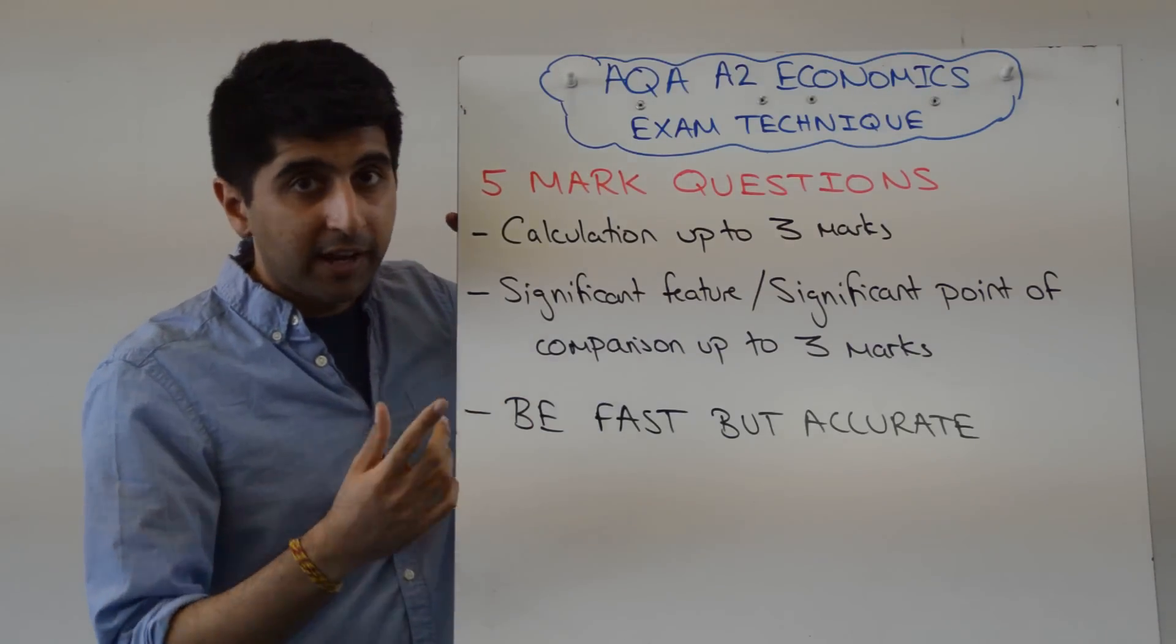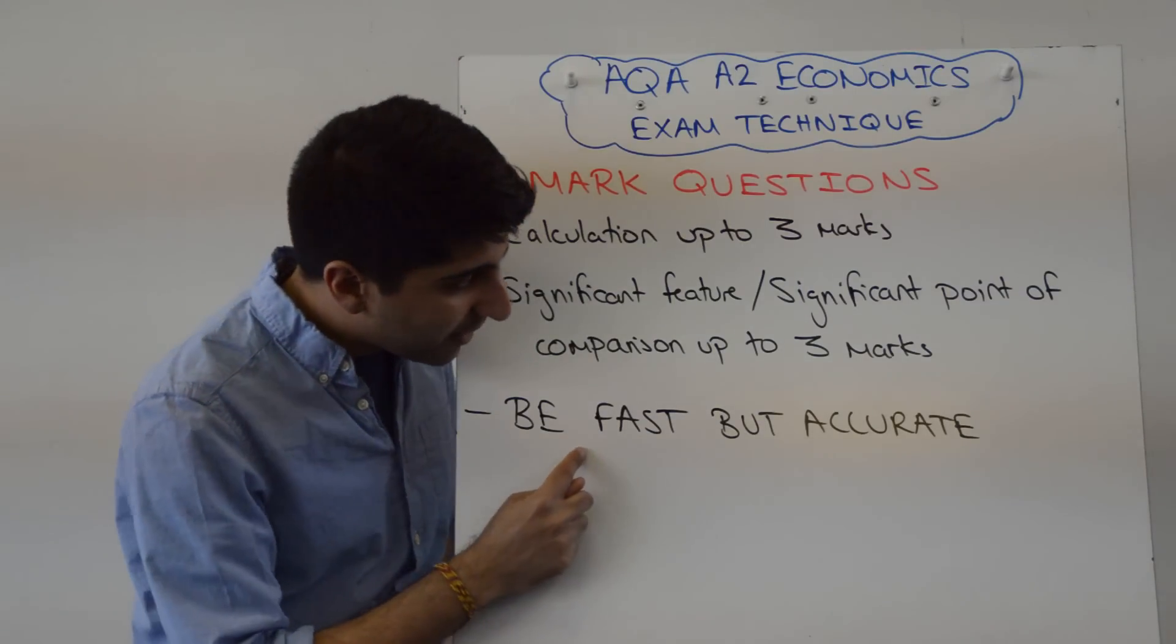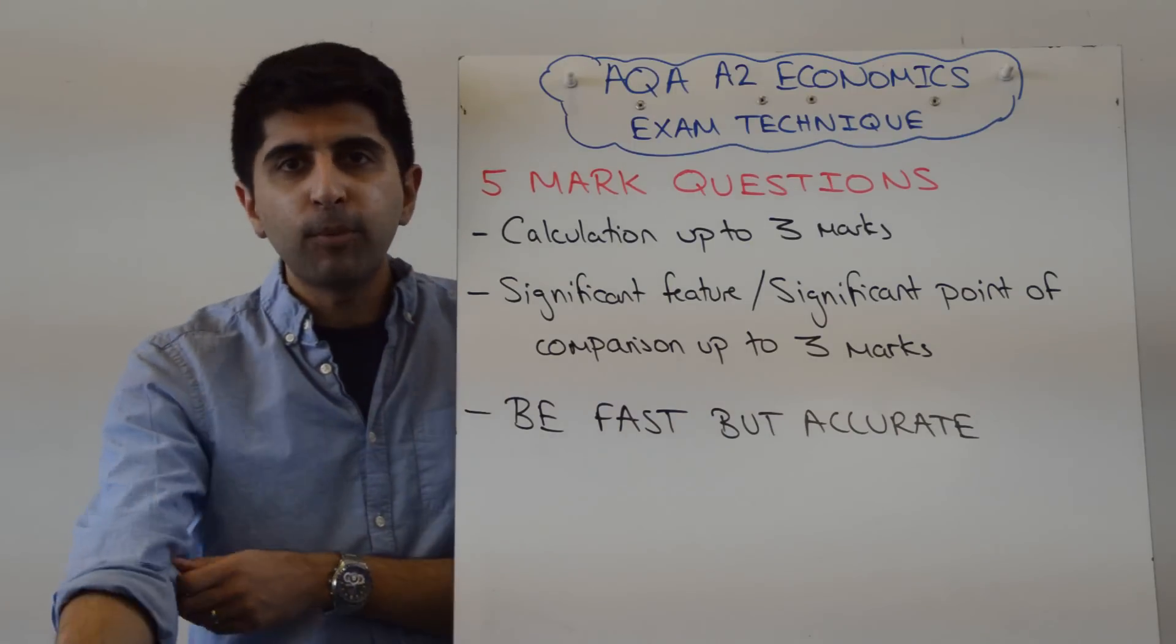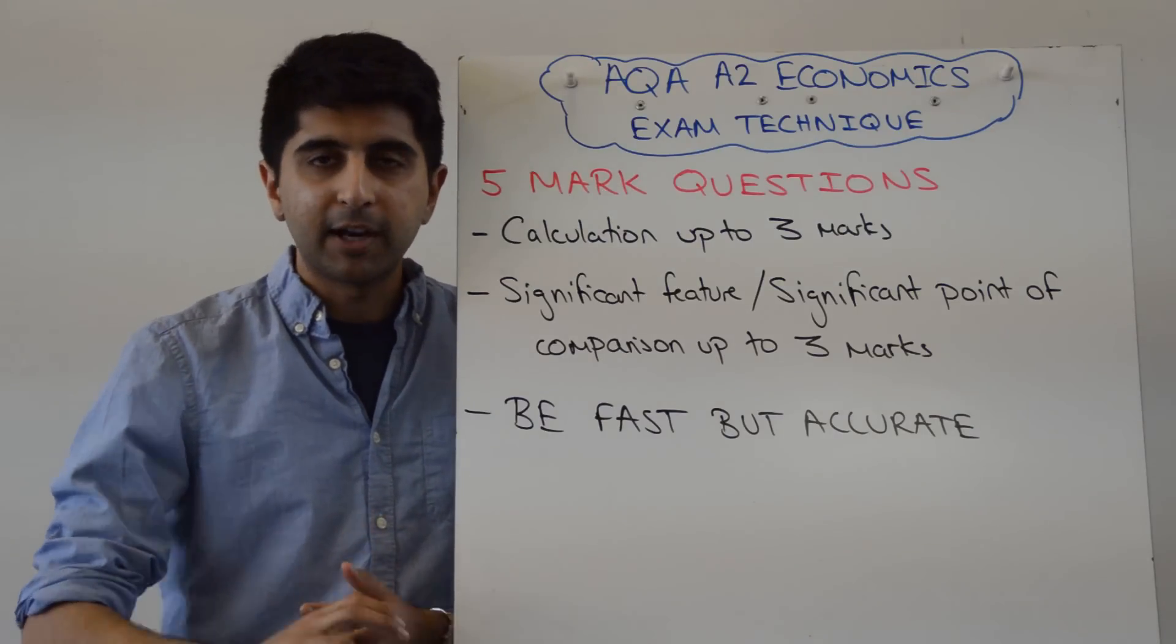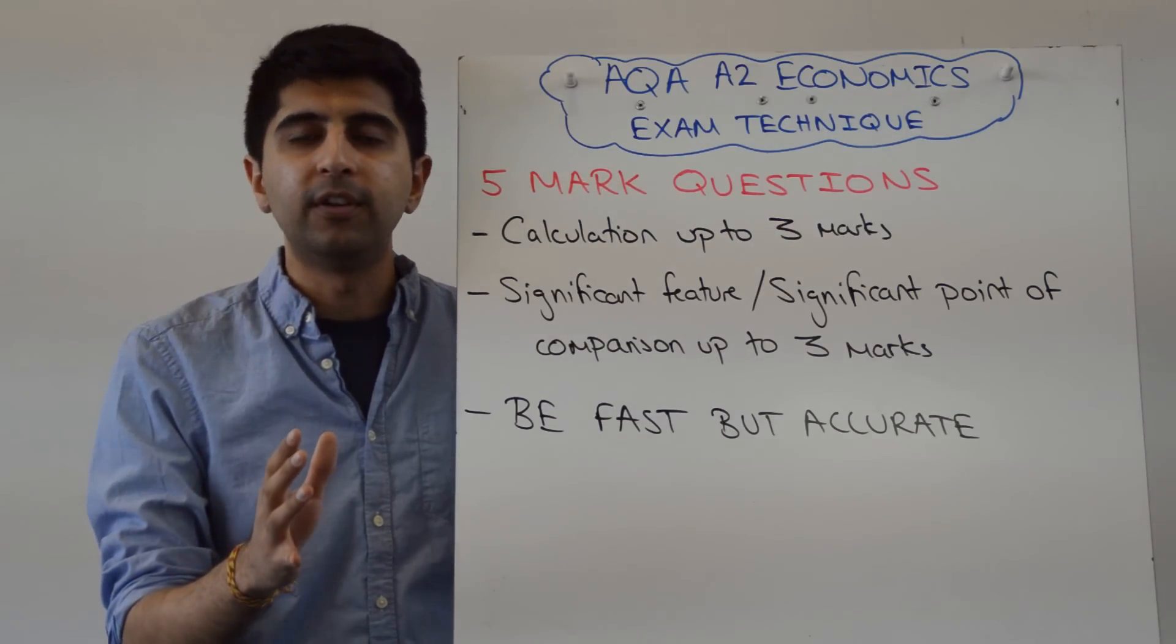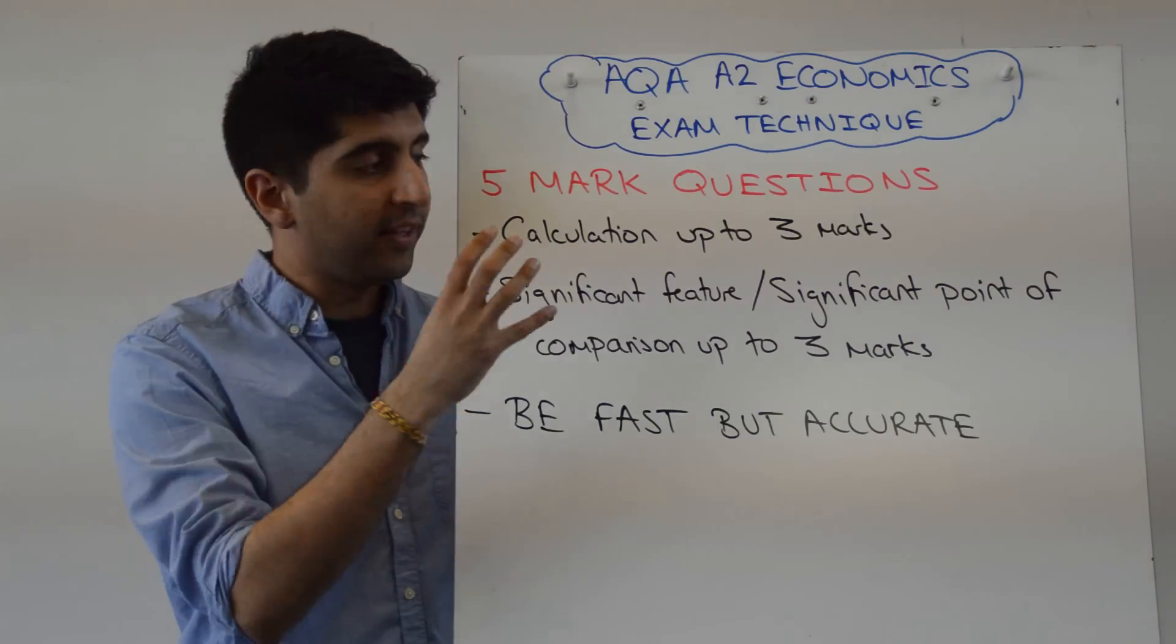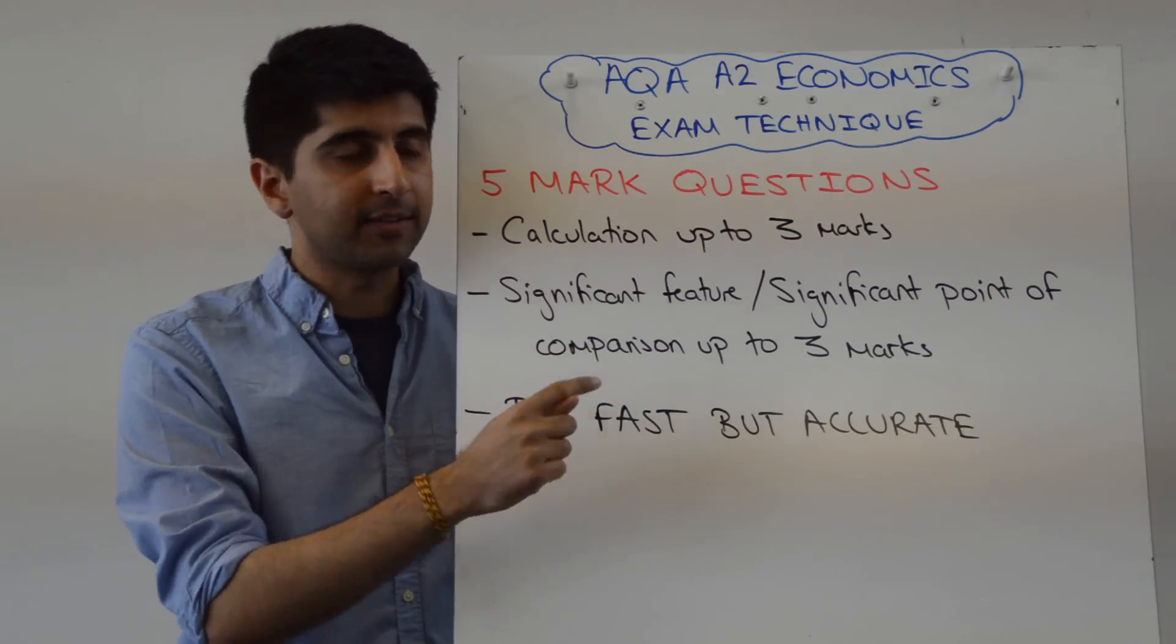Right, so that should be fine in terms of getting 5 marks. Should be absolutely fine. But the key thing in your head is to be fast and accurate. Really important because you know you've got more important questions in the paper. The 10 mark after, the 25 mark, and then the 50 and the 25 mark are coming later. They are far more important in terms of number of marks and in terms of time. So you need to make sure that this is done really fast. The quicker you do it, better as long as you know you're going to hit 5 marks.